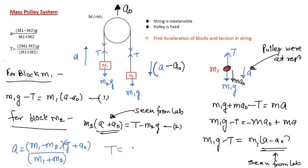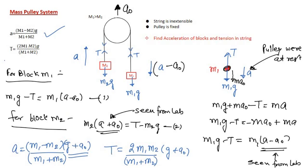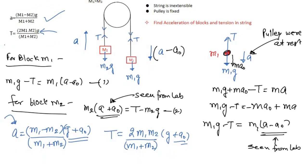The tension in the string is: T = 2·m1·m2·(g + a0) / (m1 + m2). Notice the similarity with the fixed-pulley case: when the pulley was fixed, the result had only g; now the effective gravity becomes (g + a0). You can verify: if a0 = 0, meaning the pulley is not accelerating, you recover the previous result. This confirms the consistency of the formulas.